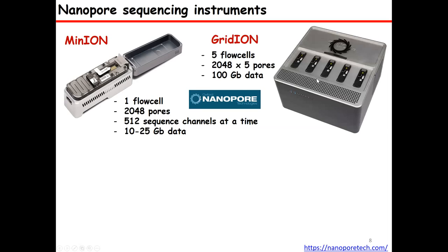There is another instrument called the GridION, which is just 5x of this flow cell. If you want to increase throughput but don't want to spend two days on sequencing, a medium throughput can be achieved. For example, 100 to 125 gigabytes can be obtained from this instrument in two days.